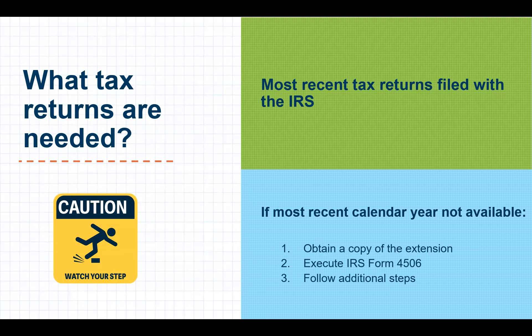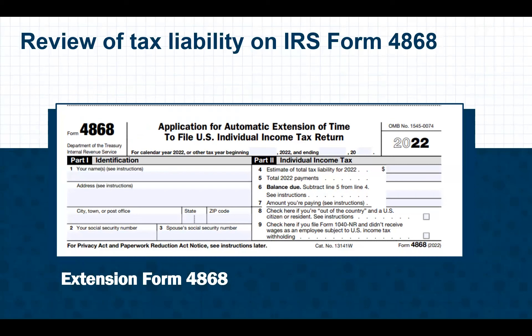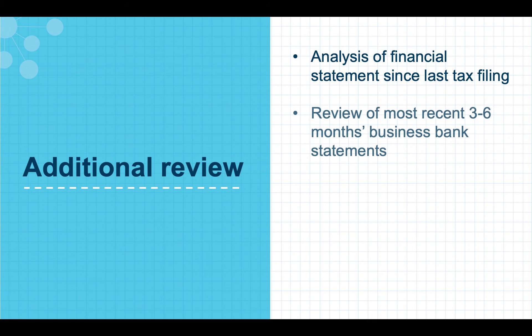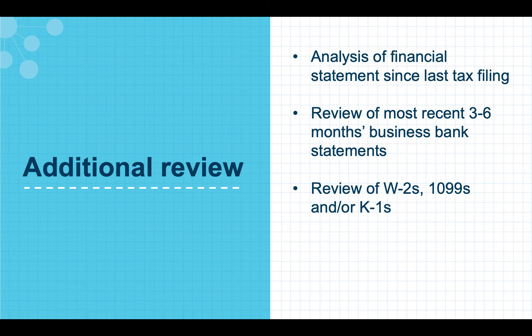When your borrower has exceeded the deadline to file taxes, an IRS Form 4868 should have been filed. Line number four will reflect the personal or business tax liability. You can compare that year's tax total liability with the prior year's filing to see how they relate. Some lenders will also require evidence that the tax liability has been paid. Lenders may take additional steps of analyzing financial statements since the last filing, reviewing several months of business bank statements, or if the borrower receives W-2s, 1099s, or K-1s associated with the business, you can review those to see if the income is on track. Some lenders might also request IRS Form 941, which is the quarterly filing for the business.